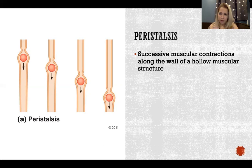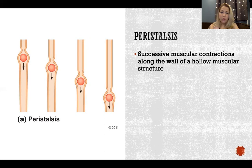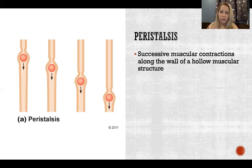Peristalsis is not uniquely digestive. It happens in many different systems in the body, because we have lots of hollow muscular structures where we want to propel contents onward. We see peristalsis in the urinary tract, the respiratory tract, the reproductive tract, and in blood vessels. Anywhere we have hollow tubes, peristalsis can take place — it is not specifically a digestive function.